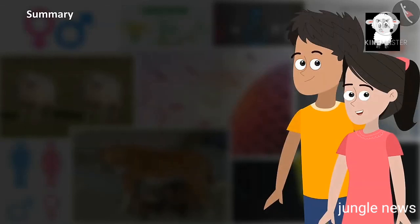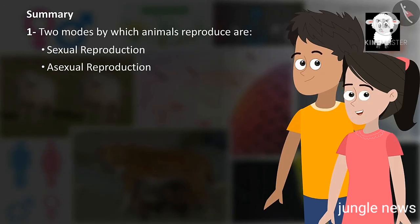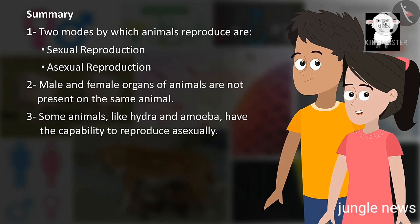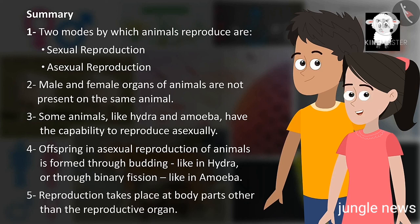Let us summarise our learning. Two modes by which animals reproduce are: sexual reproduction and asexual reproduction. Male and female organs of animals are not present on the same animal. Some animals like hydra and amoeba have the capability to reproduce asexually. Offspring in asexual reproduction is formed through budding, like in hydra, or through binary fission, like in amoeba. Reproduction takes place at body parts other than the reproductive organ.